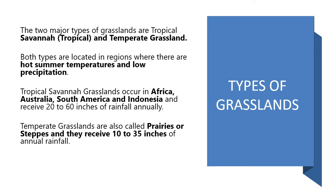The tropical savannah grassland region lies in the rain areas of Africa, Australia, South America, and Indonesia and receives approximately 20 to 60 inches of rainfall annually. Whereas temperate grasslands are referred to as prairies or steppes — a very special term associated with these temperate grasslands. They receive approximately 10 to 35 inches of annual rainfall. So if you compare, temperate grasslands are getting less rainfall as compared to tropical grasslands.